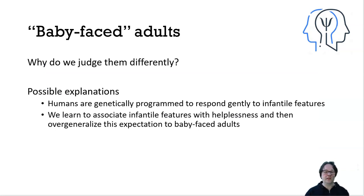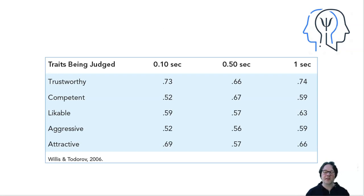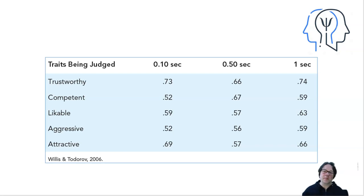Why do we judge baby-faced adults differently? Baby-faced individuals tend to be rated as more trustworthy but less competent, more likable, and less aggressive. When it comes to attractiveness, it depends on the interaction between the gender of the perceiver and the gender of the person being perceived. Typically, males prefer more baby-faced or feminine characteristics in females, while females tend to prefer more mature or masculine features in males.